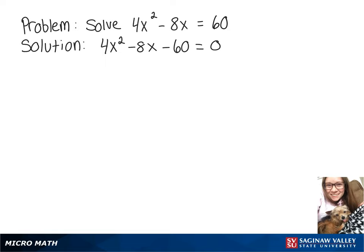Now I'm going to factor a 4 out of this equation to give us 4 times x squared minus 2x minus 15 equals 0.